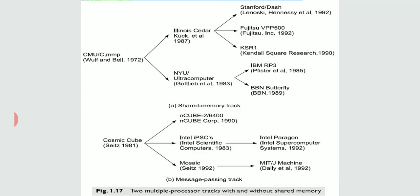In the same line, Fujitsu VPP 500 and Kendall Square Research (KSR) used cache-only memory access. These developments took the technology in another direction — from UMA, through CEDAR's parallel compilers, to KSR's cache-only memory units. The Ultracomputers line developed into systems with 222 processes running in parallel, followed by commercial projects like BBN Butterfly and IBM RP3, all using shared memory technology.